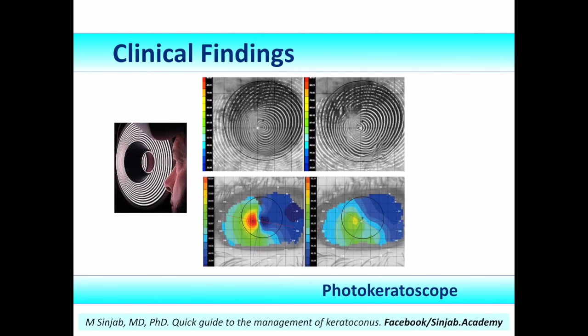The same principle is used in the photokeratoscope or videokeratoscope, but the difference is that in this machine, the computer transfers the information taken by the Placido disk into color-coded maps, where the steep areas are color-coded as hot spots with hot colors, while the flat areas are color-coded with cold colors.